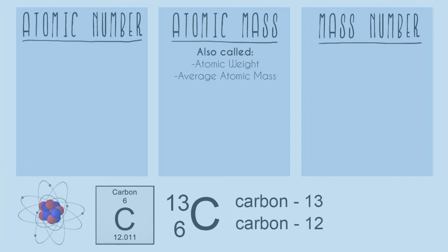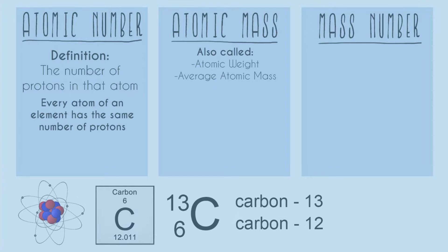Let's start with atomic number — this is the most simple of the three. The definition of atomic number is just the number of protons in that atom. If you know how many protons you have, you know the atomic number, and vice versa. Every single atom of an element has the same number of protons. Every atom of carbon has six protons — that's the atomic number of carbon. There is no such thing as a carbon atom with five or seven protons. If it has six protons, 100%, it's a carbon.